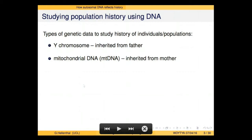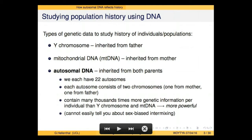It's passed along from mother to offspring. I'm going to be talking about a different type of DNA known as autosomal DNA, which is much of the rest of your genome. In contrast to these two types of DNA, autosomal DNA is inherited from both parents — it's averaged across both parents. We each have 22 autosomes. Within each autosome, you have one chromosome from mom and one from dad. One big advantage of autosomal DNA is that it contains many thousands of times more genetic information per individual than either Y chromosome or mitochondrial DNA.